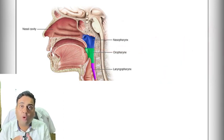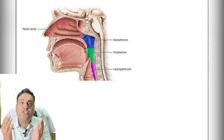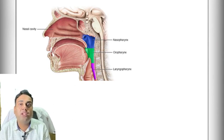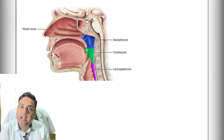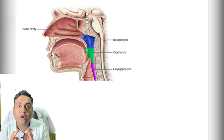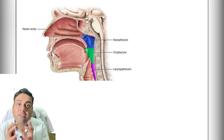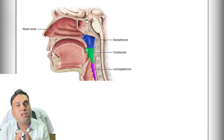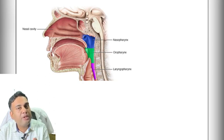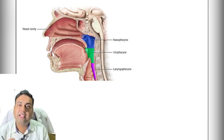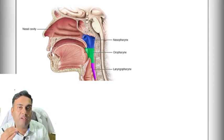Wherever mucosa changes in our body — like in the oropharynx, in the lower esophagus, or in the urinary tract — that transitional zone is very important because it is where cancer commonly develops, as the mucosa's behavior changes at that point. The squamocolumnar junction is therefore a common site for development of cancers.